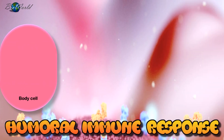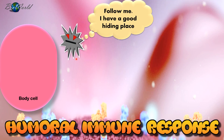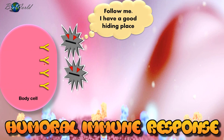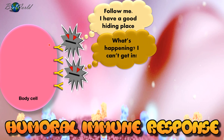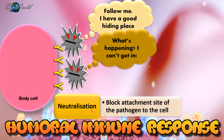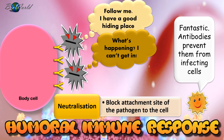Pathogens will try to escape from the macrophage and the antibody by infecting body cells. Here, the antibodies will bind to the surface of the body cells to carry out the second method, called neutralization. In neutralization, antibodies block the attachment sites of the pathogen to the cell, thus preventing them from infecting the cell, meaning that the pathogen cannot hide from either macrophage nor antibodies.